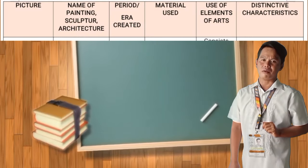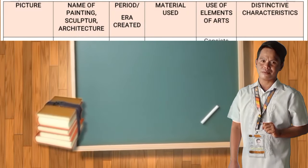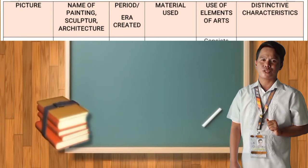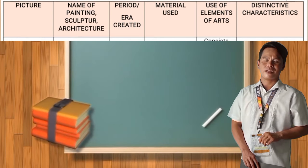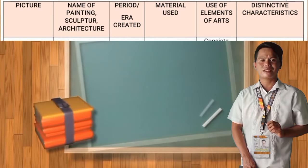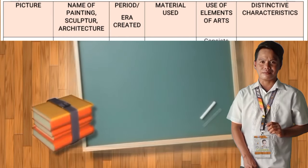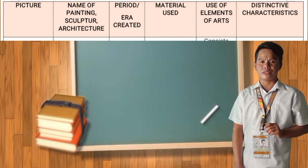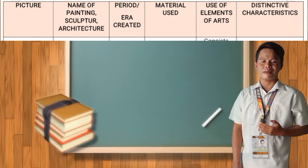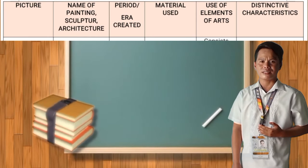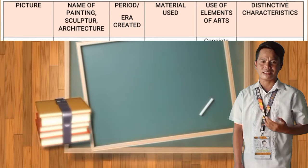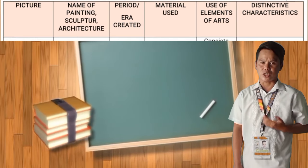The first column is the name of the artwork — may it be painting, sculpture, or architecture. Then the period and era it was created. The next column is the material used. Then the use of elements of art, and the distinguishing characteristics of each artwork.